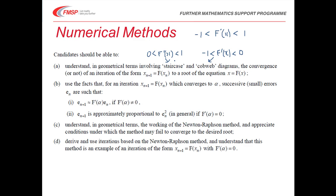In part B, we've got to use the facts that for iteration X_{n+1} = F(X_n), which converges to alpha, then successive small errors E_n are such that — in two different situations: first, a linear approximation where E_{n+1} is approximately equal to F'(α) · E_n, and that occurs if F'(α) is not equal to 0. And secondly, E_{n+1} is approximately proportional to E_n squared if F'(α) is equal to 0 — that's a quadratic approximation.